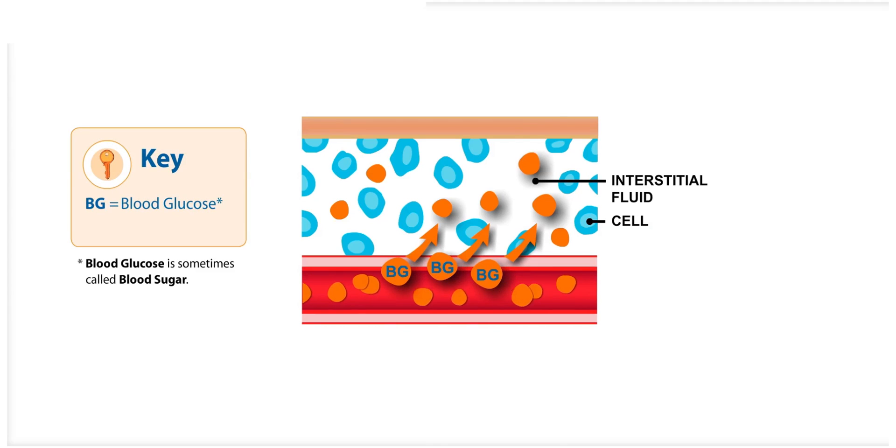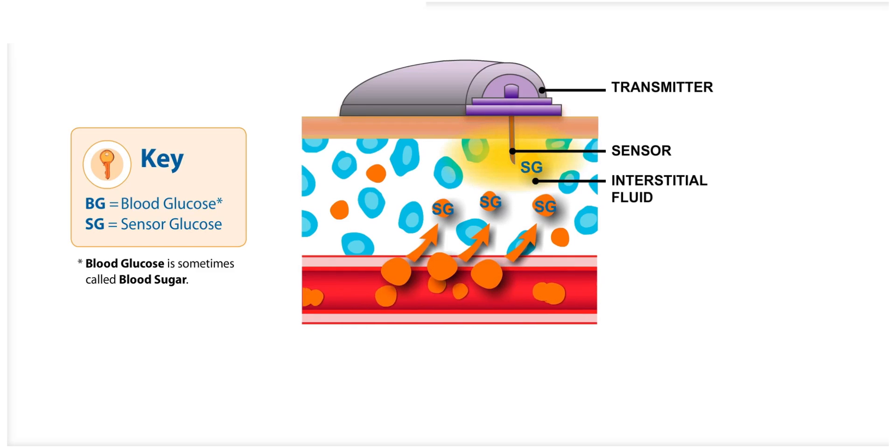When you wear the sensor, it measures the level of glucose in the interstitial fluid, that is, the fluid that surrounds the cells. We refer to this type of glucose reading as sensor glucose, or SG.